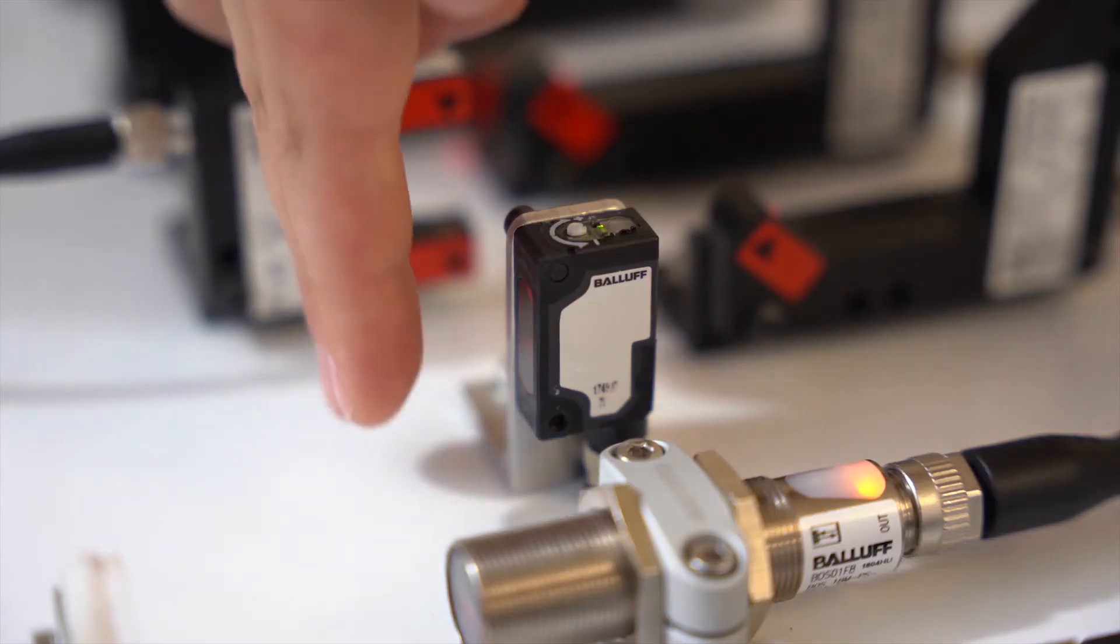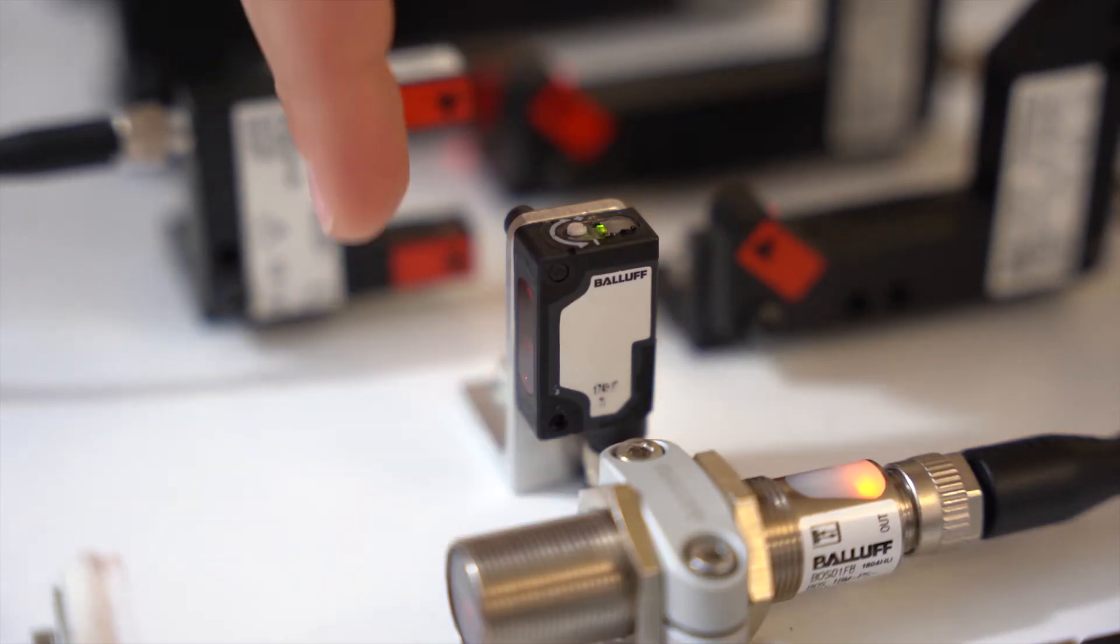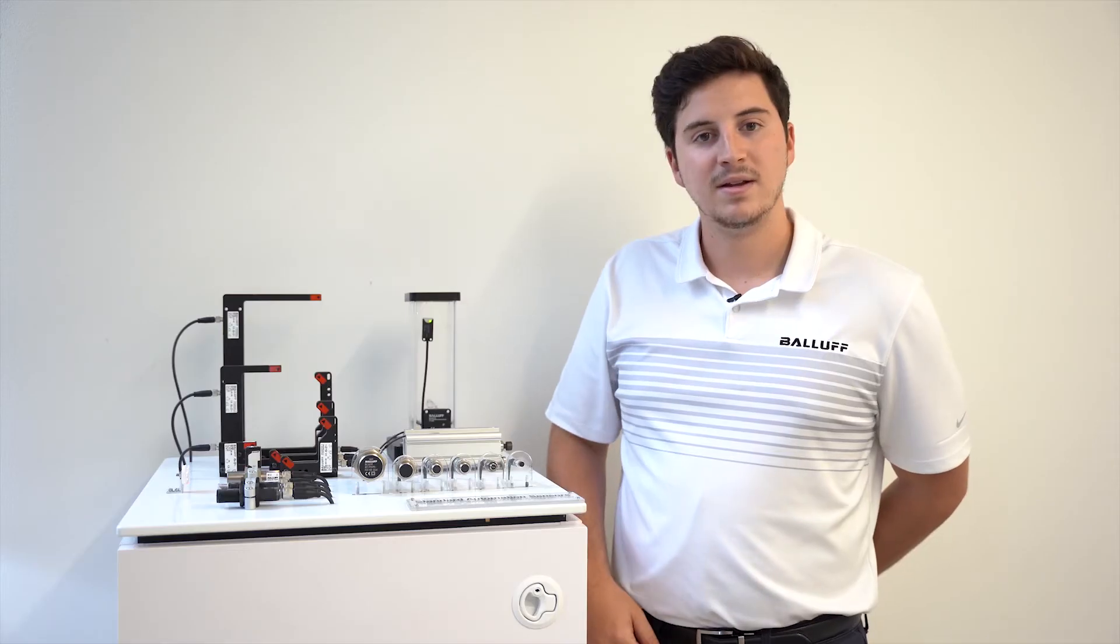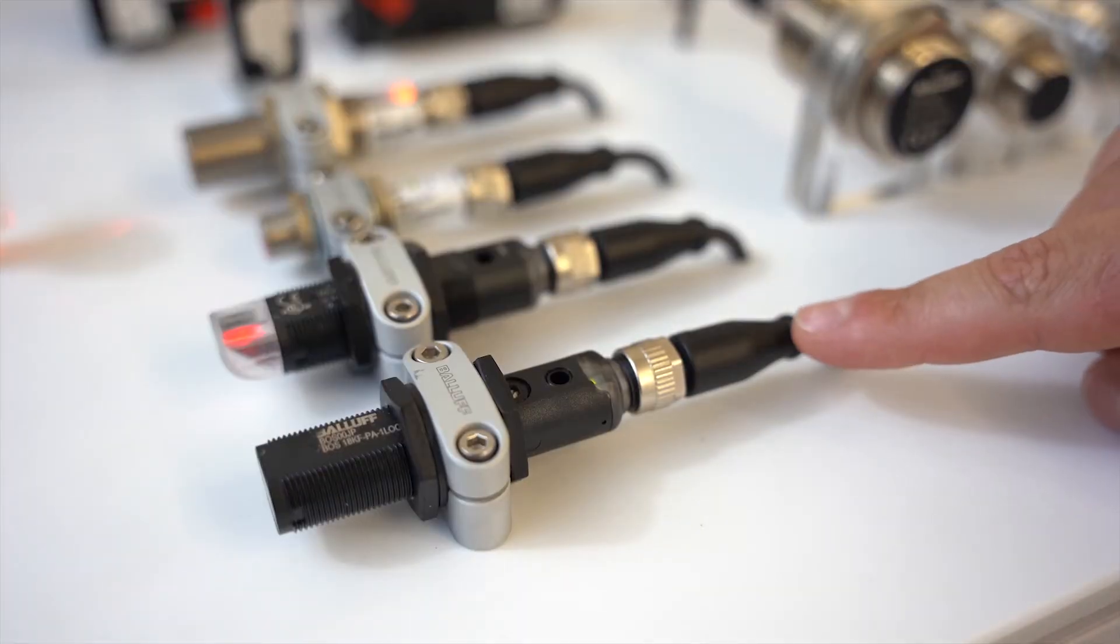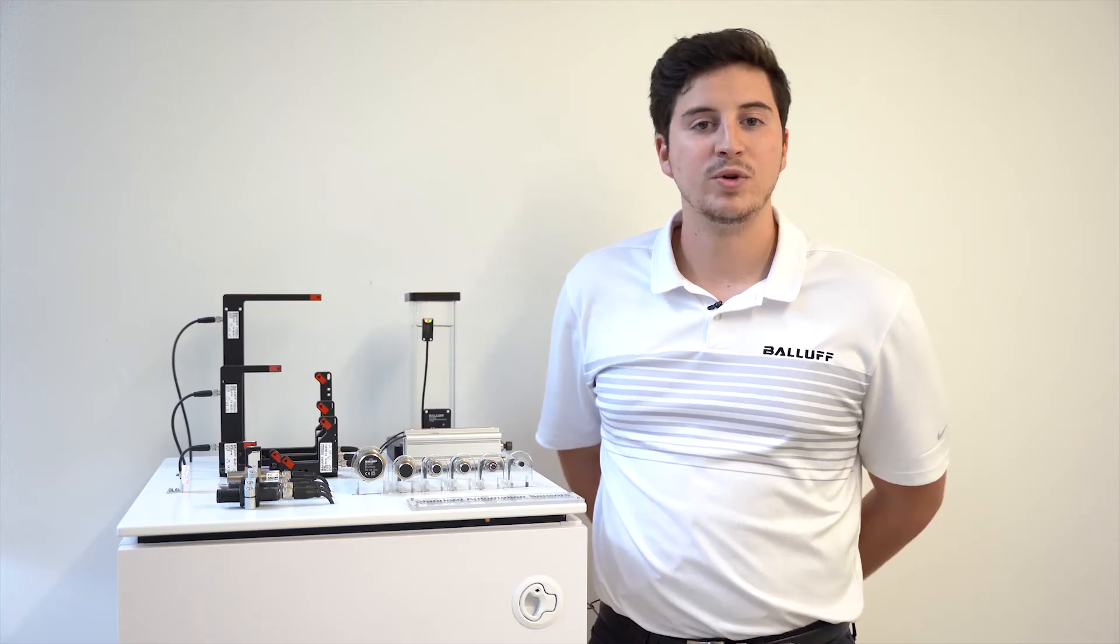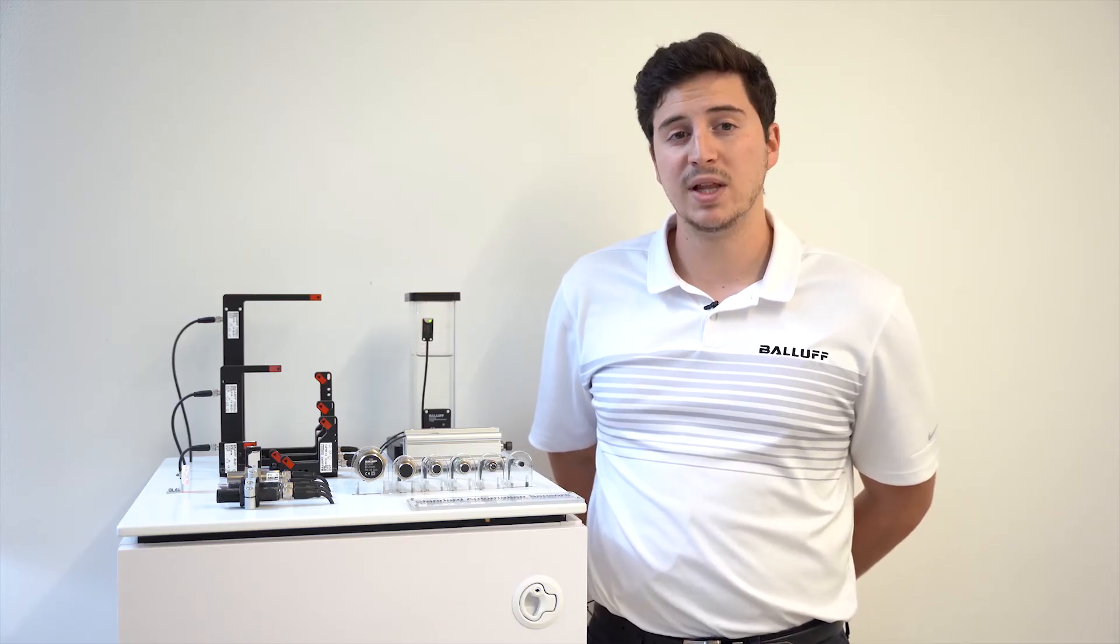As I stick my hand in front of that sensor, in front of that light beam, it will trigger that output light on top of the housing. Next, this is also a diffuse sensor right here, but it operates using an LED red light beam, and so that makes it highly visible, which is a benefit during alignment and allows for quick installation.